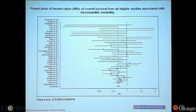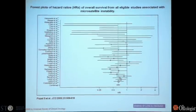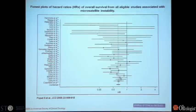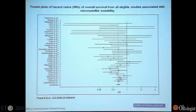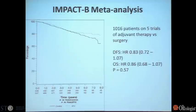The other use of this besides genetic counseling has to do with both prognostication and potentially prediction of the type of therapy that should be used. This is a meta-analysis of studies looking at outcome in early stage colon cancer based on MSI high status. In essentially all of these studies, with a few exceptions, patients who were MSI high did better — the point estimate being about 40% better than patients with microsatellite stable tumors.